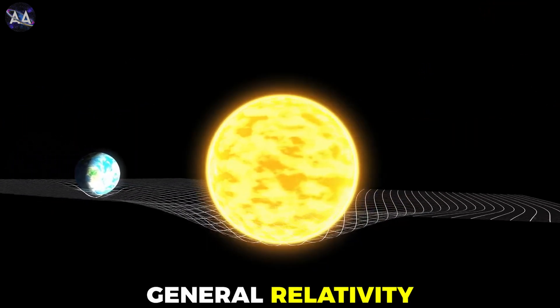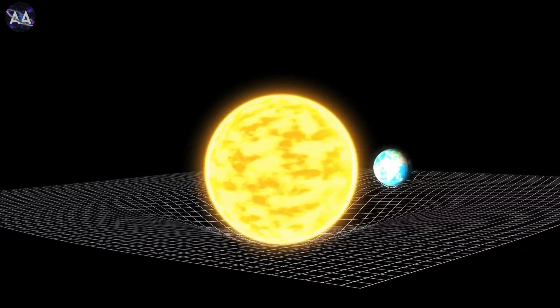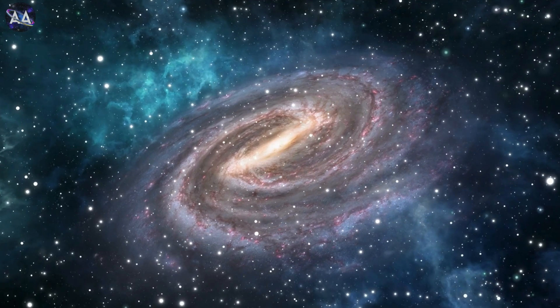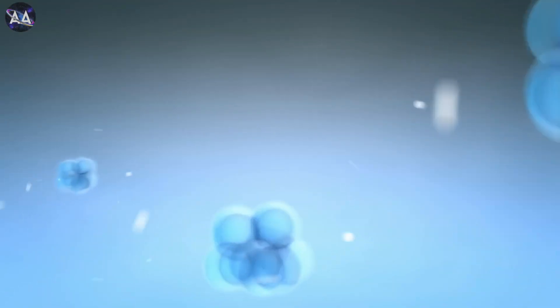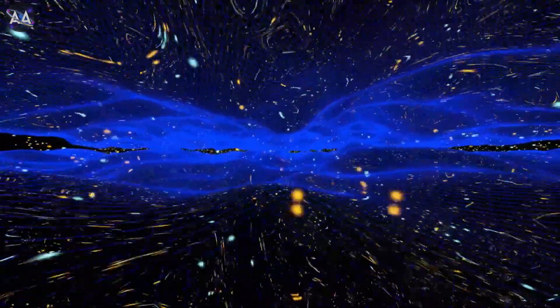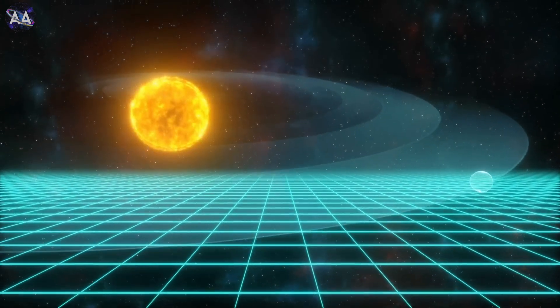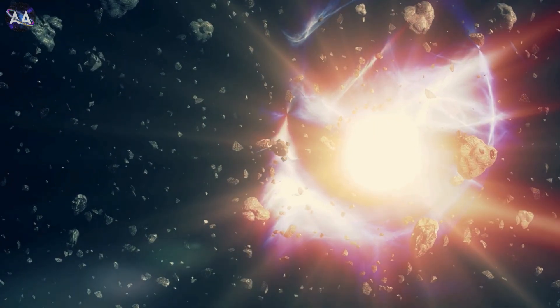The first is general relativity, which explains gravity and works really well for big things like planets, stars and galaxies. The second is quantum mechanics, which explains how tiny particles like electrons and photons behave. But these two theories don't work well together. They break down when we try to combine them, especially in extreme places like black holes or the beginning of the universe.